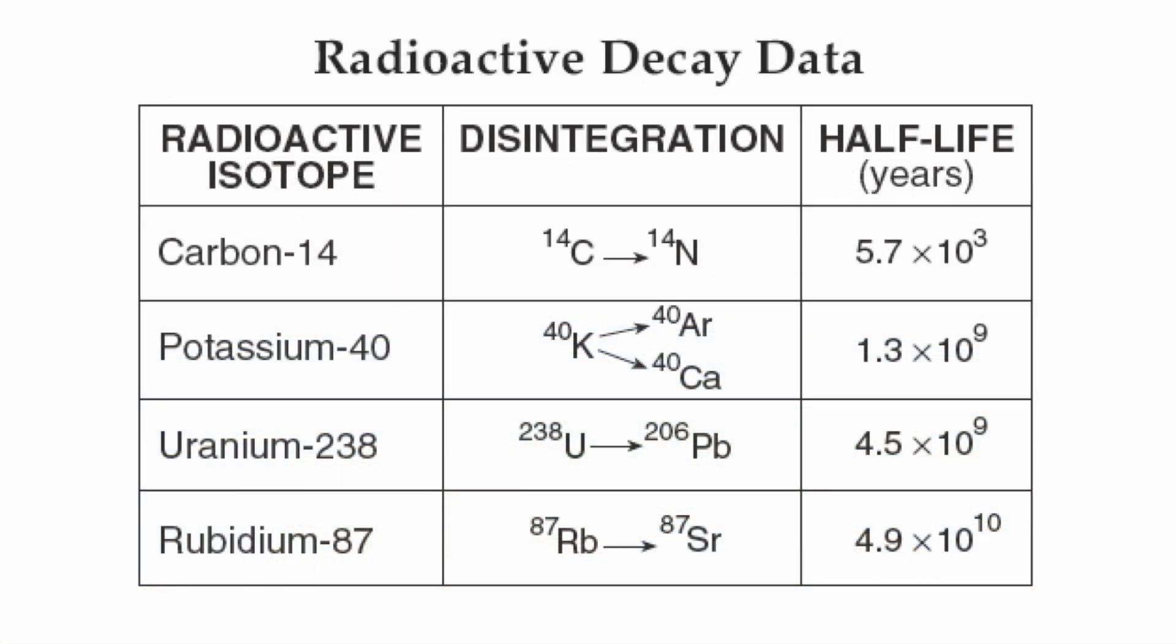Now this radioactive decay chart actually helps scientists figure out the actual age of a rock itself in millions of years. So what they use is a radioactive isotope. They take an element that's radioactive and they try to figure out the percentage of the isotope compared to what we call its daughter product.